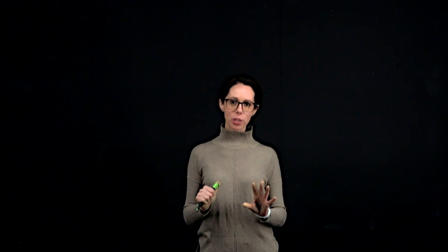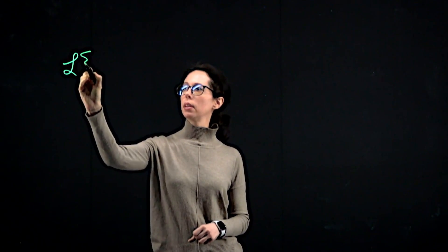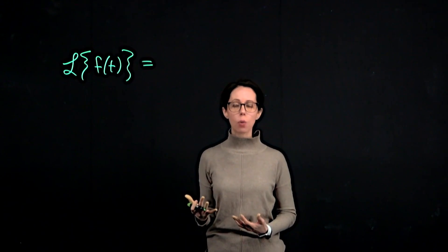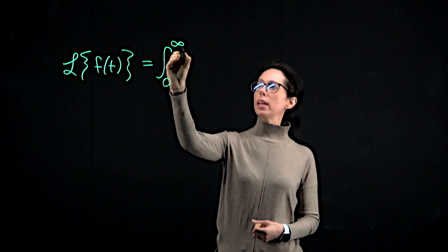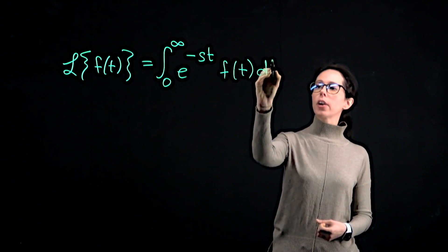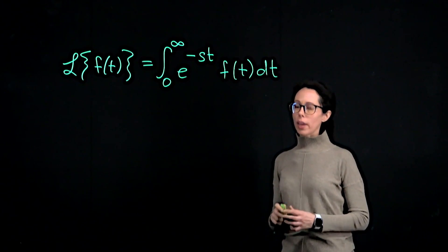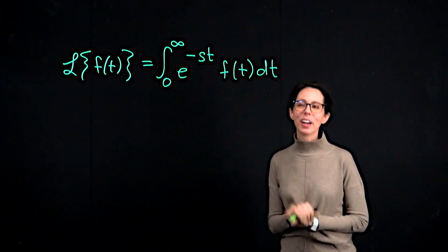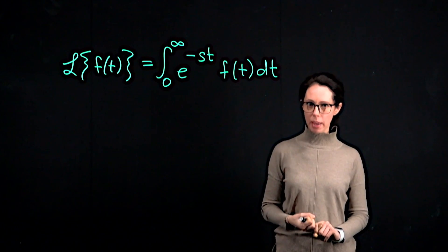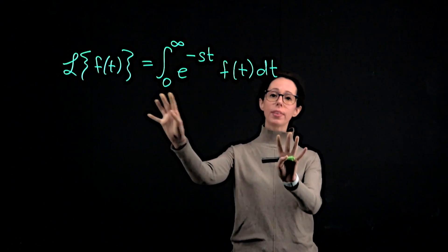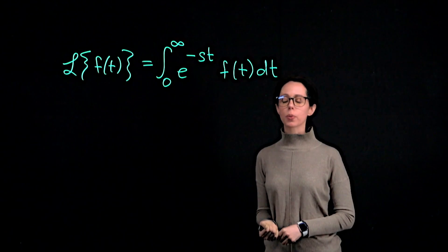Let's start by saying what the Laplace transform of a function looks like. We will say the Laplace transform of the function f of t is the improper integral from zero to infinity of e to the negative st times f of t, integrating with respect to t. This is really it for the Laplace transform of f of t, but there's a lot going on here — both computational and conceptual aspects. I'd like to focus on the computational aspects to start.